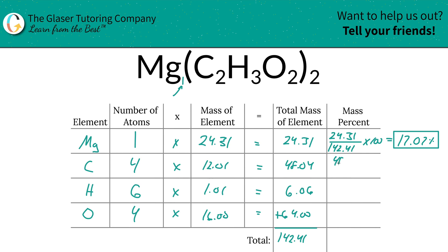Next for carbon, we take the total amount of that carbon, 48.04, divided by the total mass of the compound, 142.41. Multiply that by 100, and it's going to work out to be about 33.73.